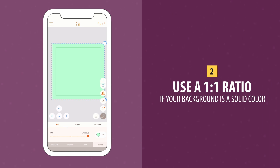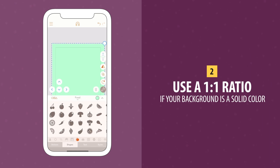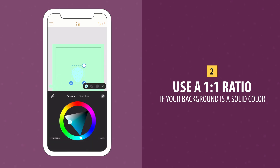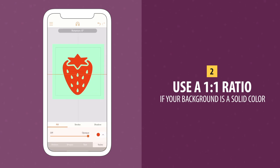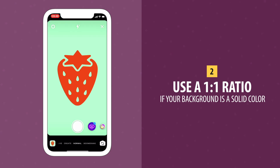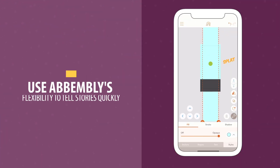Number 2. If your Assembly canvas size is square but has a single colour for its background, Instagram Stories will very helpfully recognise this and change its background to match your artwork, creating a seamless image.